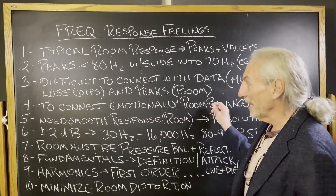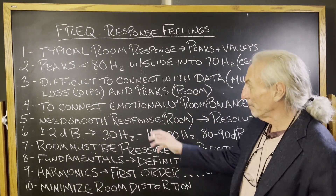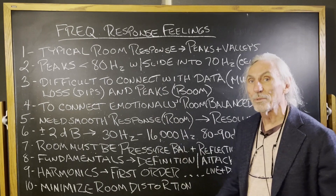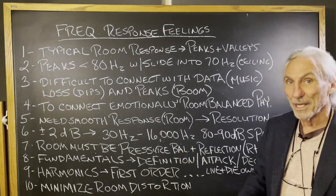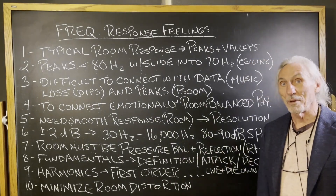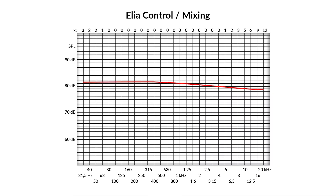To connect emotionally we need more balance — we need a smooth response. Look at this graphic; there's a really smooth response. That was a mastering room we did. That's over-the-top smooth, but mastering rooms have that 90% resolution requirement. You can see it here.